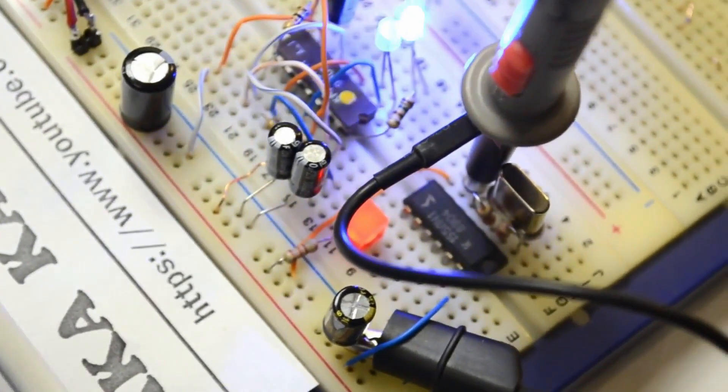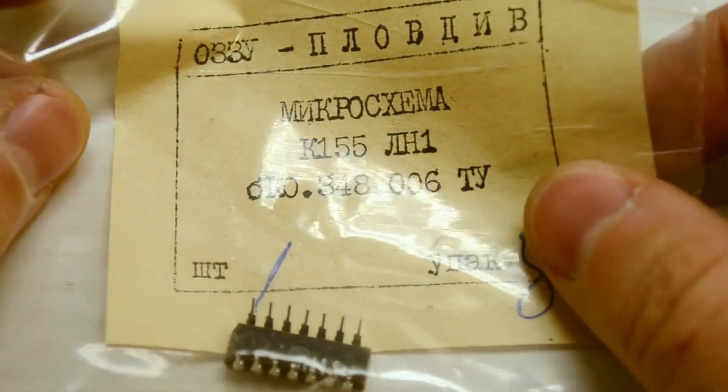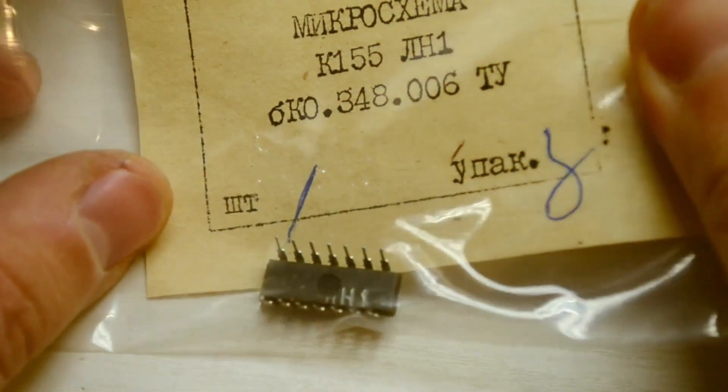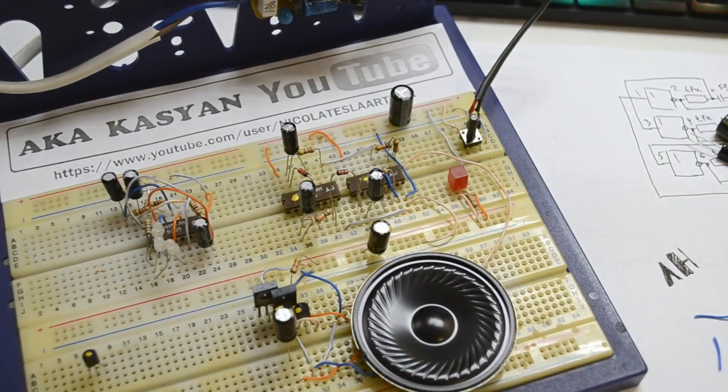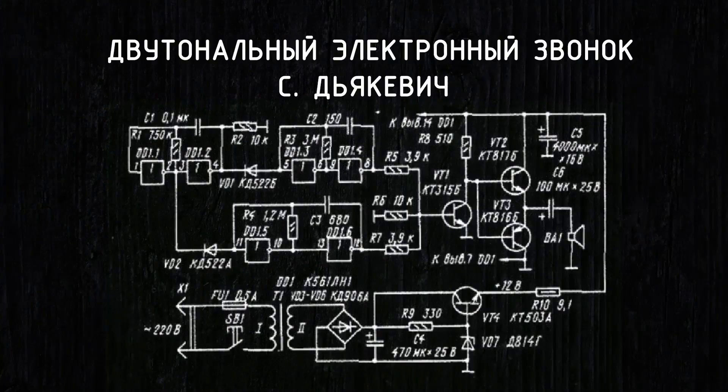Now let's move on to interesting circuits built on the LN1 base. As in the previous video, let's look at three useful circuits using the 155 series microchip. And the first circuit is a dual-tone ringer, which my wife really liked. I was inspired by Dijakovic's ringer circuit, but I decided to modify it.